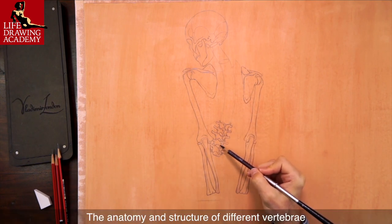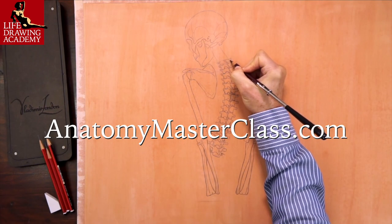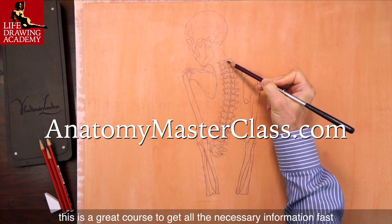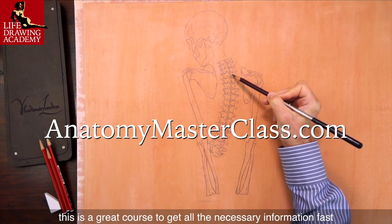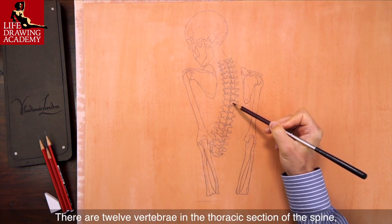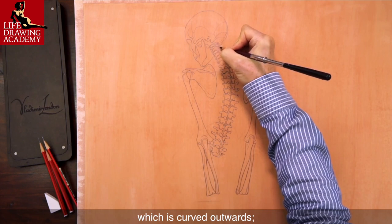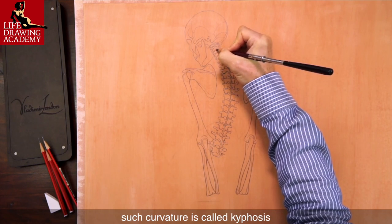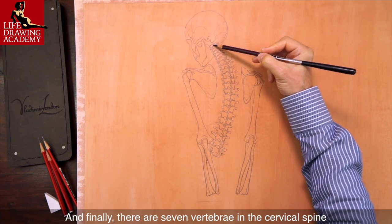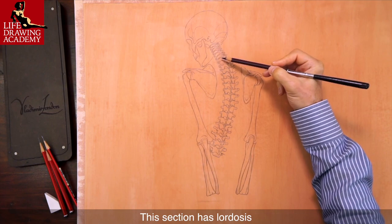The anatomy and structure of different vertebrae is fully explained in the Anatomy Masterclass. If you have some gaps in human anatomy knowledge, this is a great course to get all the necessary information fast. There are twelve vertebrae in the thoracic section of the spine, which is curved outwards — such curvature is called kyphosis. And finally, there are seven vertebrae in the cervical spine. This section has lordosis.